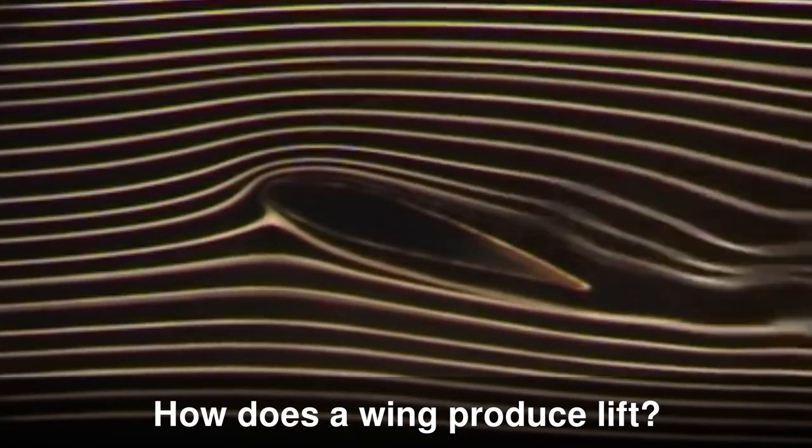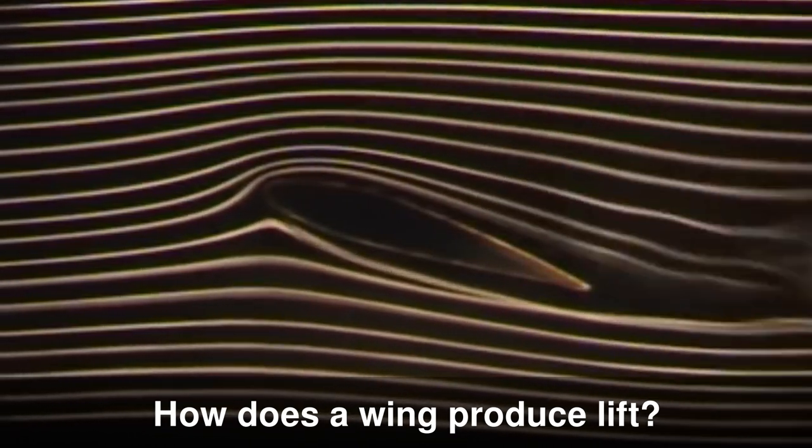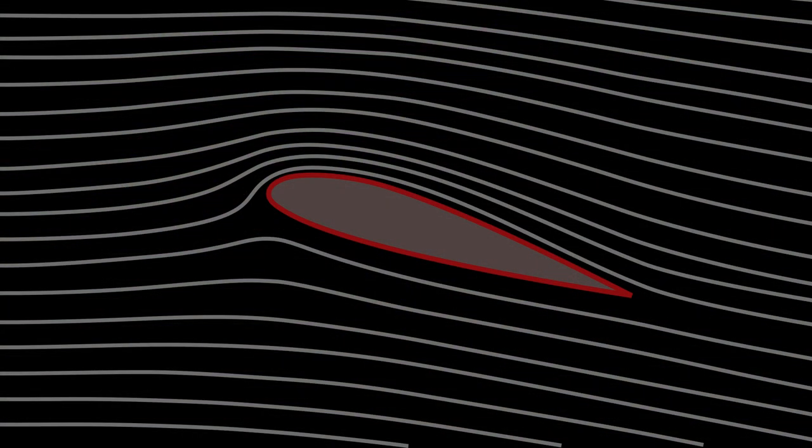How does a wing produce lift? The path that a small parcel of air takes when flowing around a wing is called a streamline. A wing has to be good at bending them to produce lift.